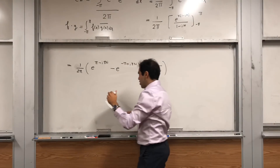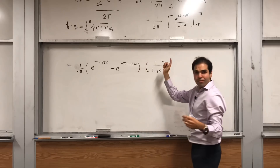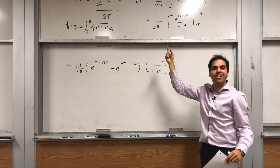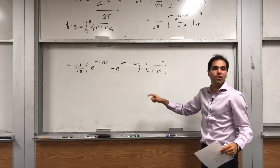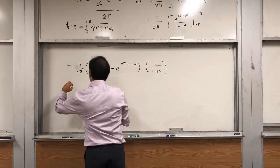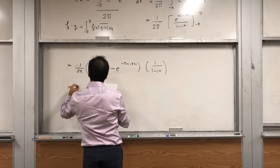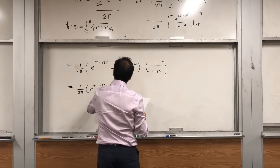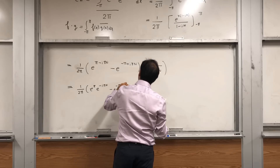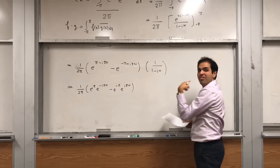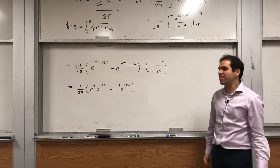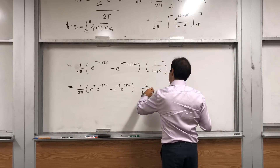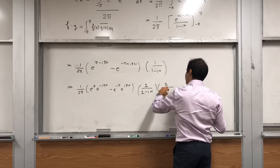Now let's continue and write this in terms of real and imaginary parts. So this becomes 1 over 2 pi times e to the pi times e to the minus i pi n, minus e to the minus pi times e to the i pi n. And whenever you have an i on the denominator, multiply by the conjugate — so multiply by (1 plus in) on both sides.